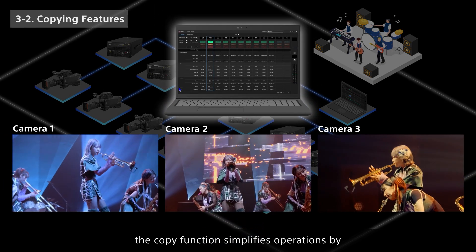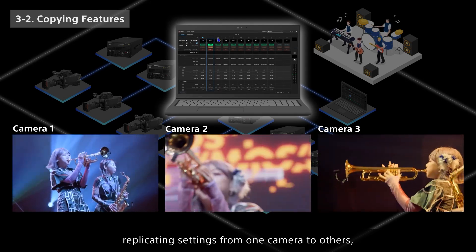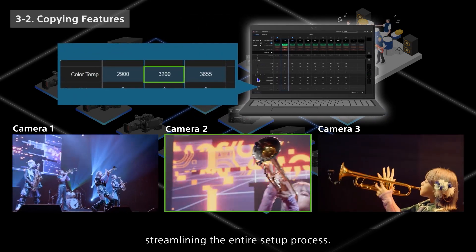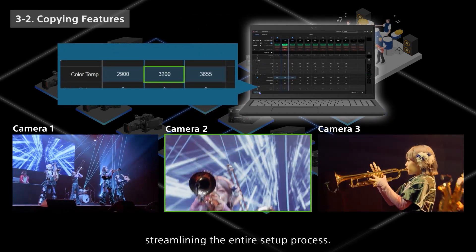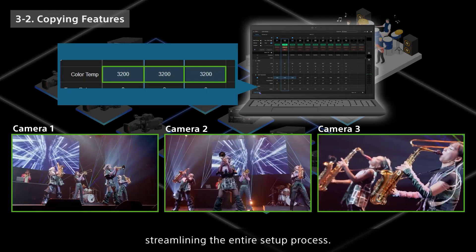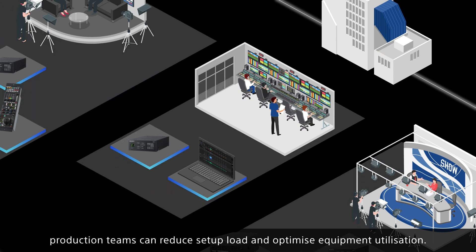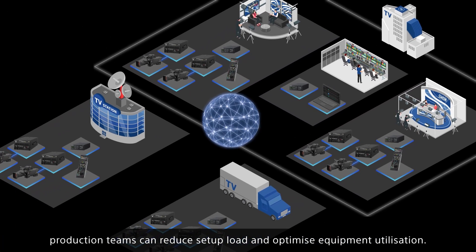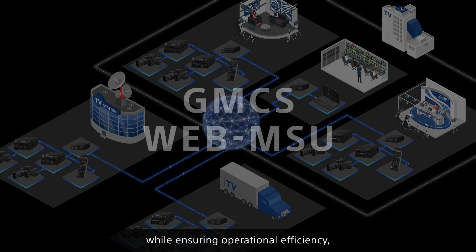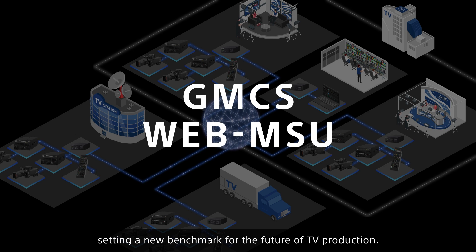Additionally, the copy function simplifies operations by replicating settings from one camera to others, streamlining the entire setup process. By integrating the GMC-S with WebMSU, production teams can reduce setup load and optimize equipment utilization. This advanced system enhances scalability while ensuring operational efficiency, setting a new benchmark for the future of TV production.